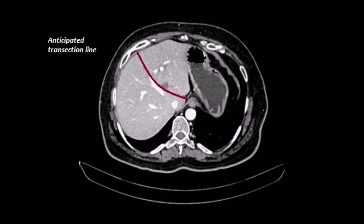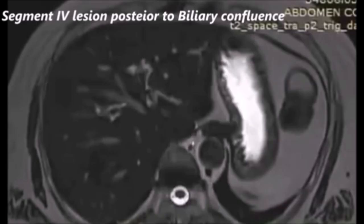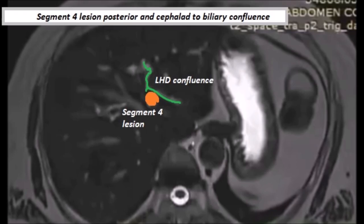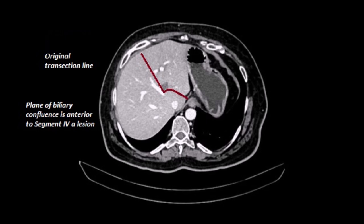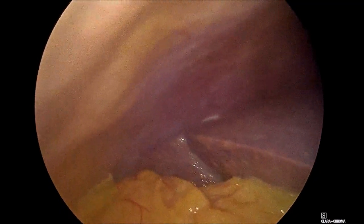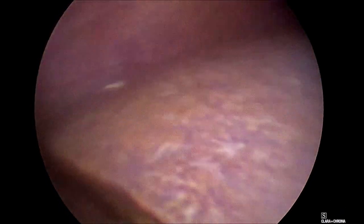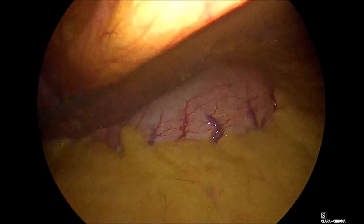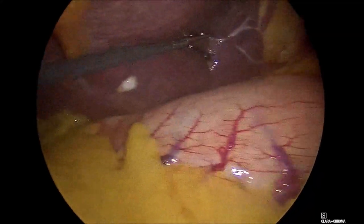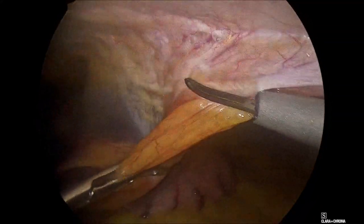Care should be taken while transecting. This was the usual line of transection, but since the patient had a biliary confluence anterior to the segment 4 lesion — the segment 4 lesion being just posterior and cephalad — this modified the plane of transection. Going straight could damage the right anterior sectoral duct. Staging laparoscopy confirmed segment 3, segment 4 AFI tumor.